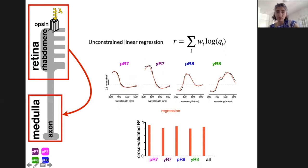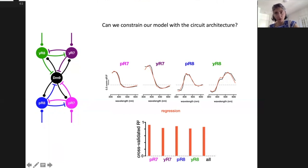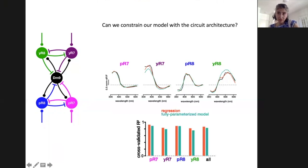We used the unconstrained linear regression as a benchmark for further modeling. The actual curves in orange show the unconstrained linear regression, along with a histogram of cross-validated R-squared values. We then built a linear recurrent network constrained by circuit connectivity and synaptic signs, fitting the steady-state responses of this model to our measured amplitudes — we call this the fully parametrized model. When constrained by this architecture, our model has a goodness of fit comparable to the unconstrained linear regression, even though it has fewer parameters.